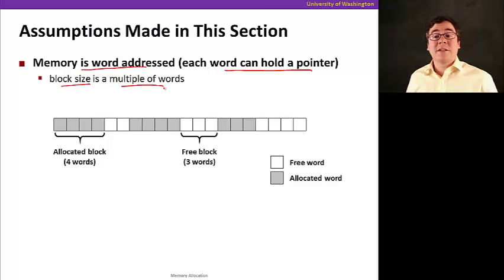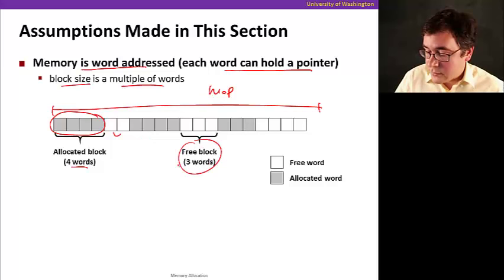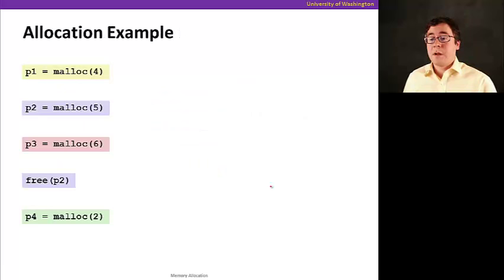For example, if here we have our heap, we'll have an allocated block here that happens to be four words, and I have a free block here that happens to be two words, and so on. Another free block here. This is a free block and this is an allocated block.